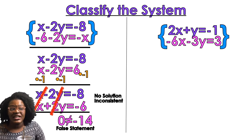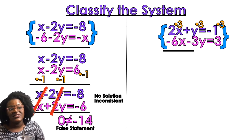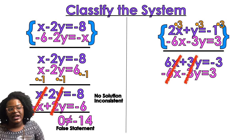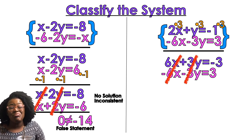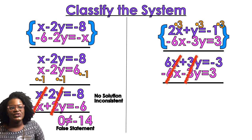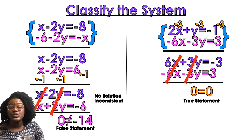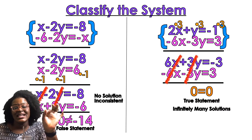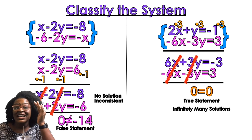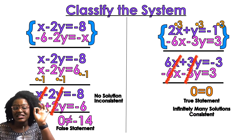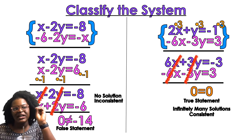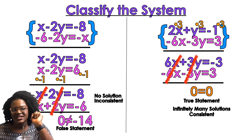For the next example, I'll use elimination again. I multiply through by 3 so the y-terms cancel with the negative 6. I get 6x plus 3y equals negative 3, and again both variables cancel out, giving me 0 equals 0 — a true statement. That means infinitely many solutions. Since it has a solution, the system is consistent. And because it's infinitely many solutions rather than just one, it is dependent.